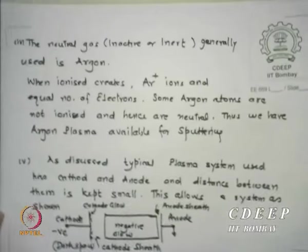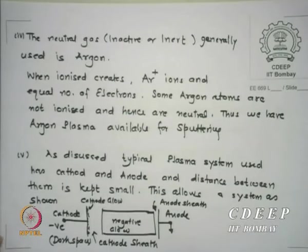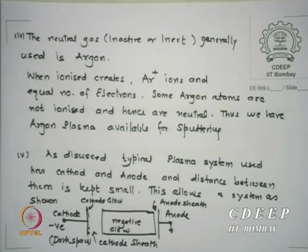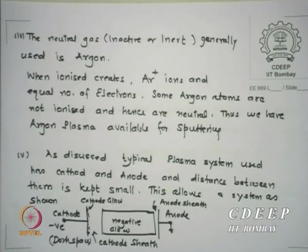I have argon gas which is neutral or inactive. Argon has atomic number 18 and is sufficiently large in size. Please remember: when it is ionized, it will have equal numbers of electrons and positive ions. Plasmas are always neutral. Thus we have argon plasma available for sputtering.